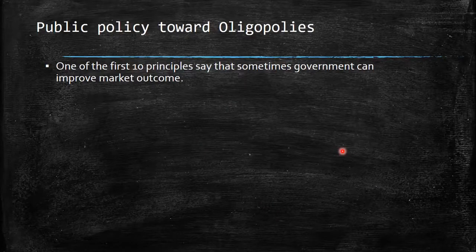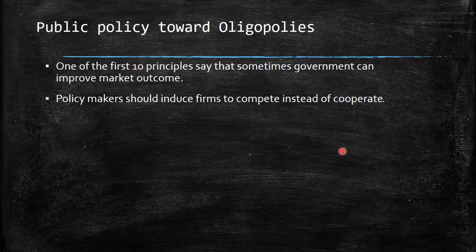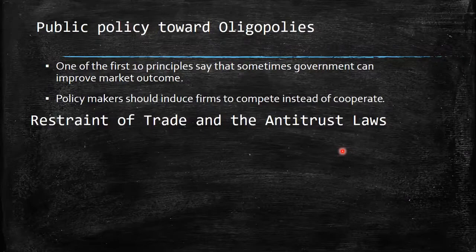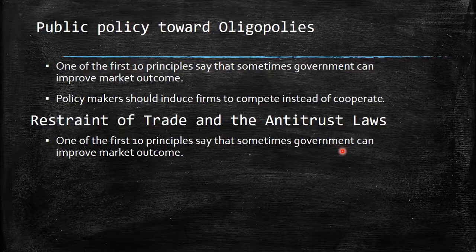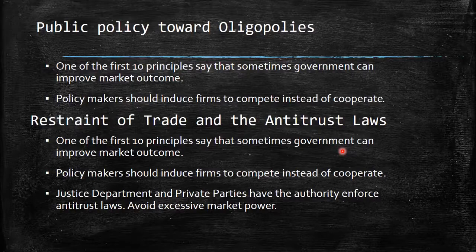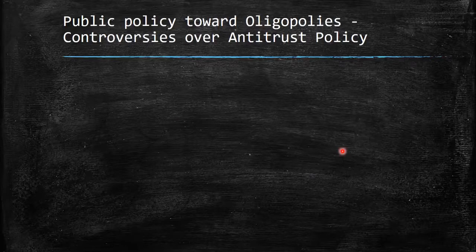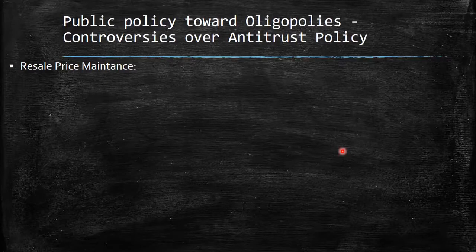On public policy toward oligopolies: one of the first 10 principles states that government can improve market outcomes. Policy makers should induce firms to compete instead of cooperate, since competition brings lower prices and more quantity for society. There is a restraint of trade through antitrust laws. The Justice Department and private parties have authority to enforce antitrust laws, which exist to prevent excessive market power.